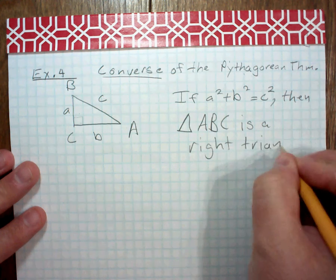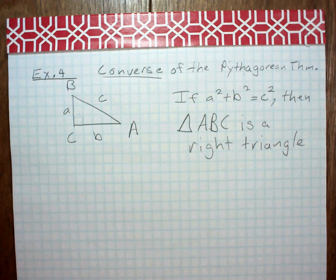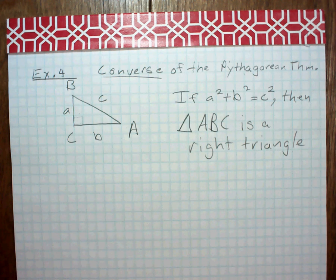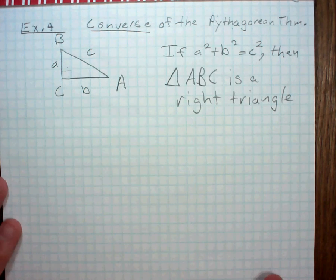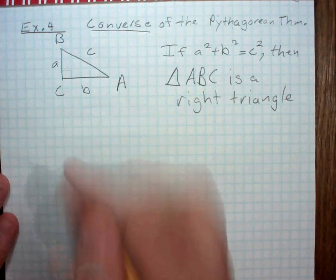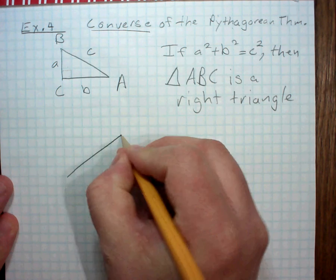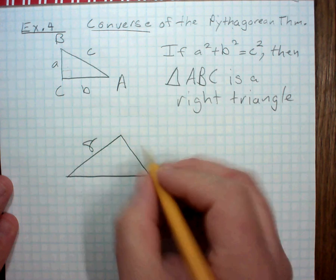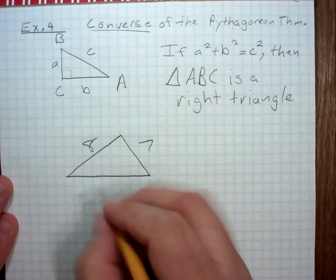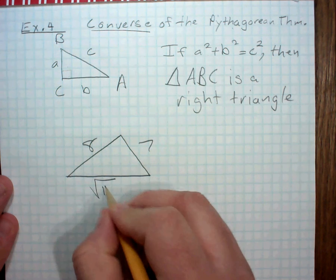So, let's do the example. If I have, and this is going to be, we're going to try and incorporate some extra math in here, too. So, this will be kind of challenging, but I got a triangle that's 8, 7, and the square root of 113.